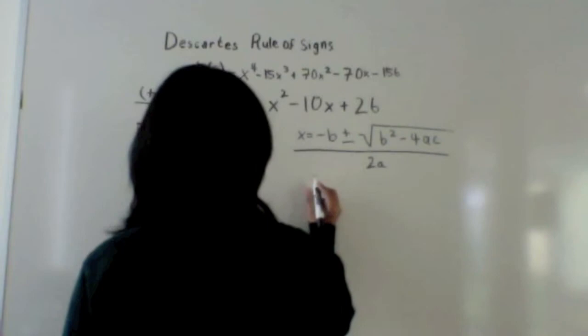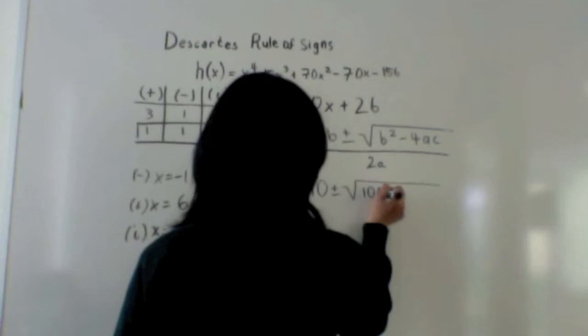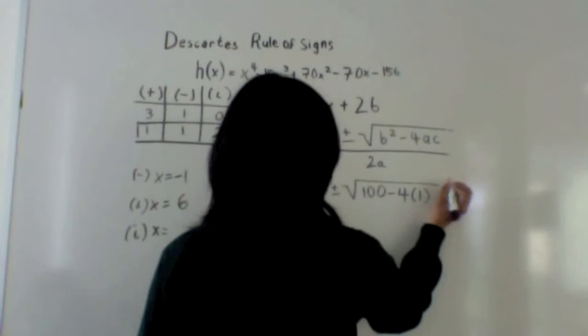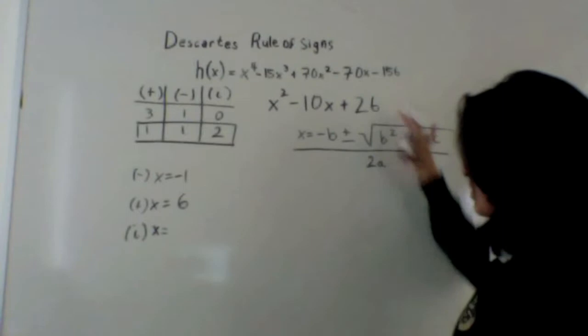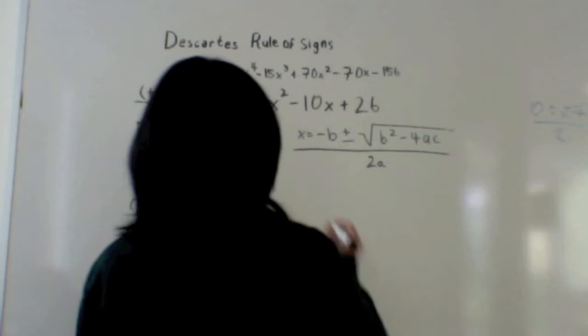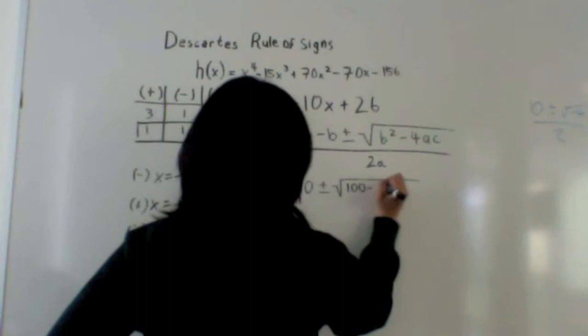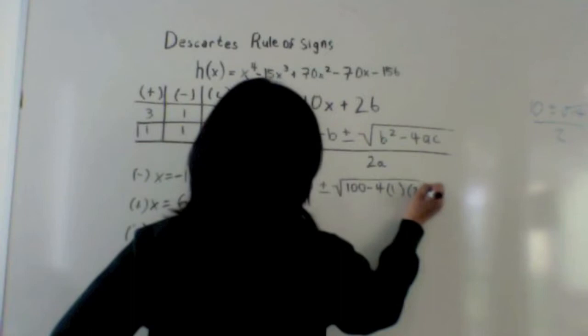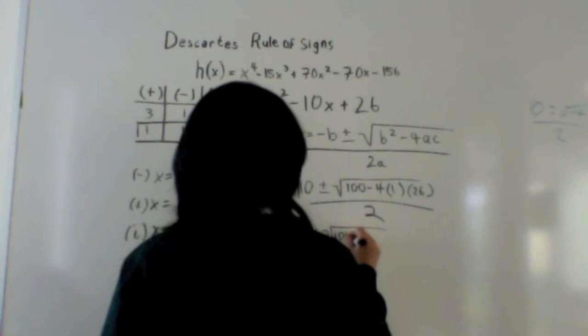Using the quadratic formula with b = negative 10, which turns to positive 10, plus or minus the square root of 100 minus 4 times 1 times 26, all over 2. We plug the equation from synthetic division into the quadratic formula: 10 plus or minus the square root of 100 minus 4 times 1 times 26, all over 2. Simplifying gives 10 plus or minus the square root of 100 minus 104, over 2.